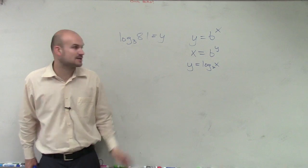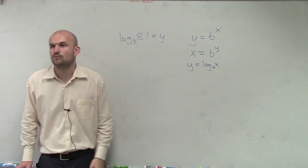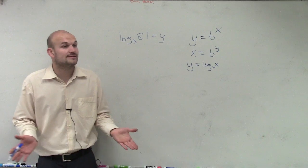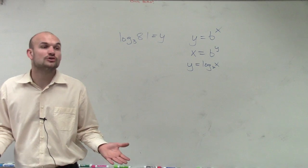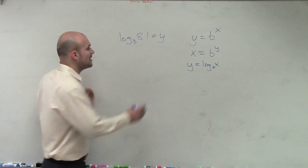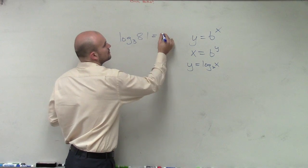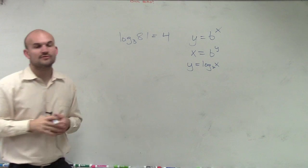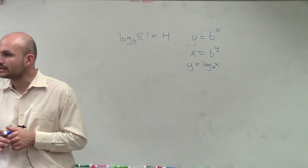So 3 raised to what power gives us 81? Let's think about it. 3 squared would be 9, 3 cubed is 27, and 3 to the 4th power. So we could say 3 raised to the 4th power equals 81.